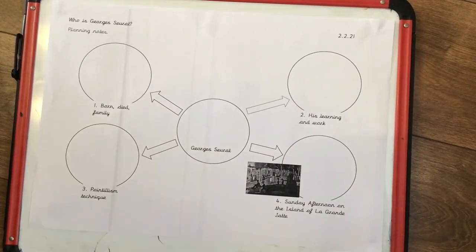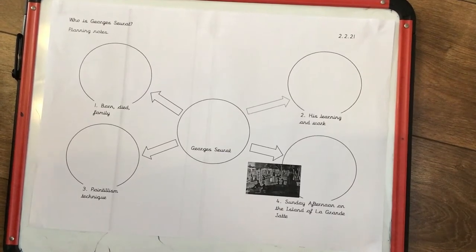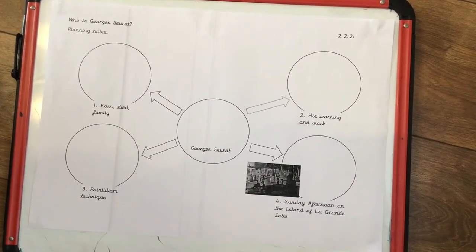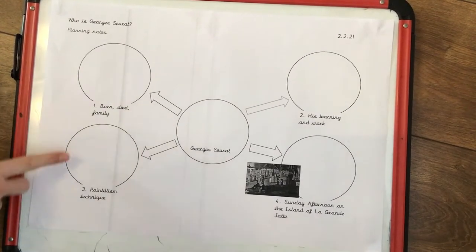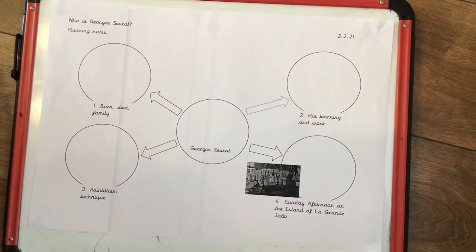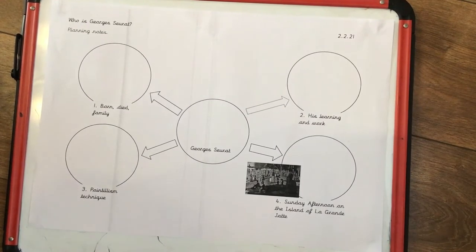When we fill in the organiser, we're not writing sentences. We're just going to write notes because you're going to be writing sentences about Jean later on in the week, and we haven't really got a lot of space to write sentences. We're just going to write a few words to help us remember what we've learnt today.